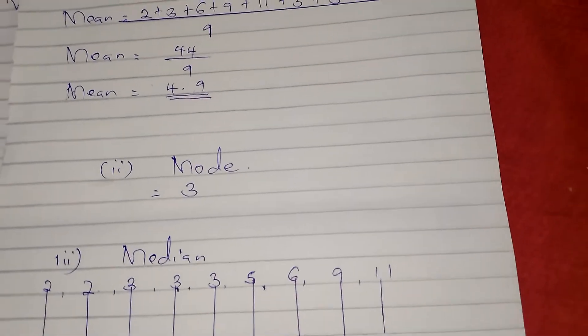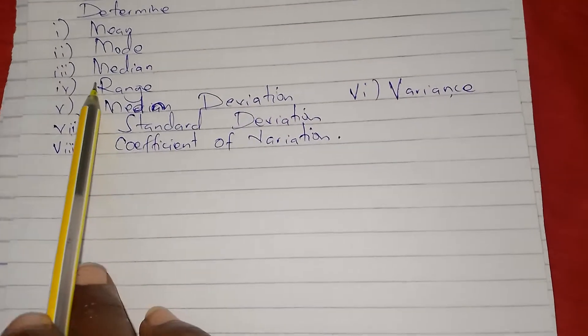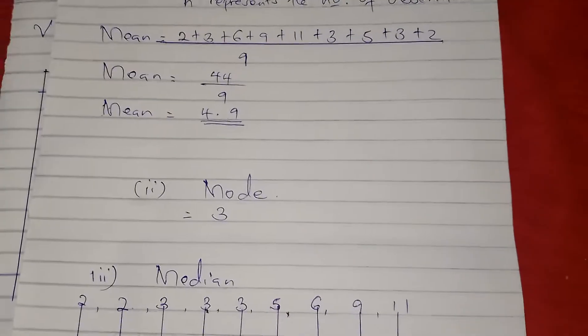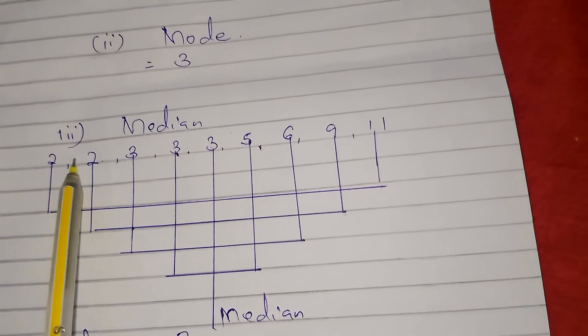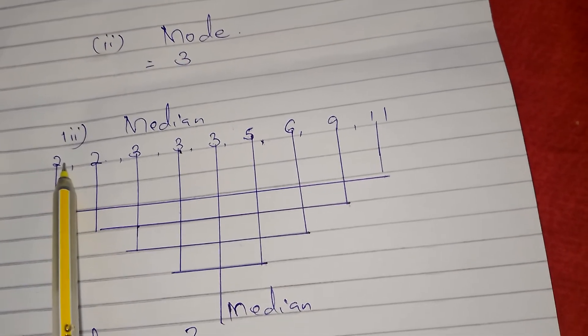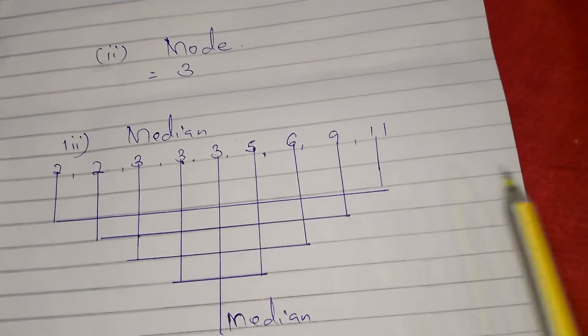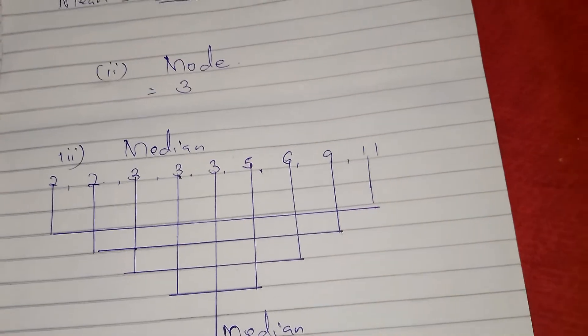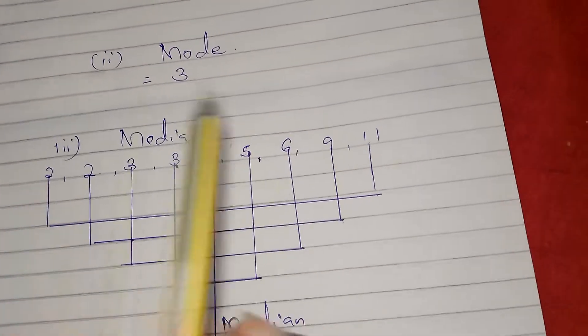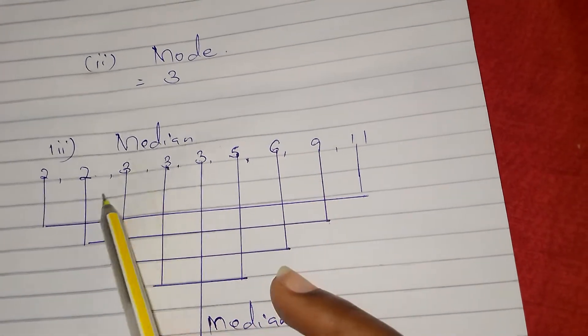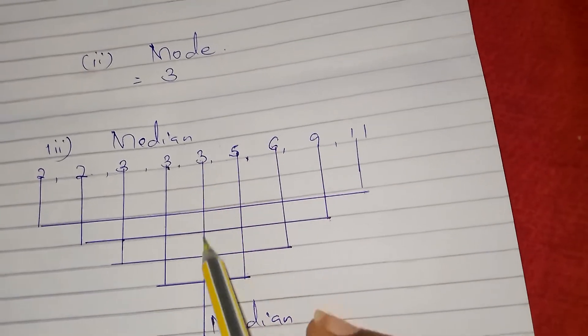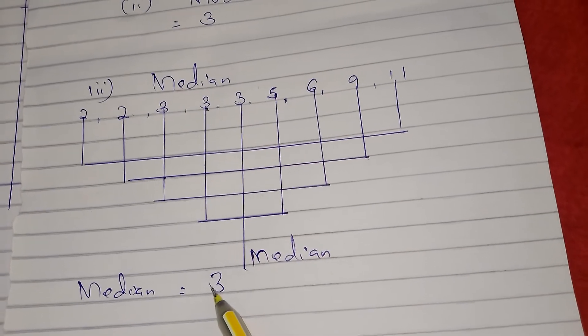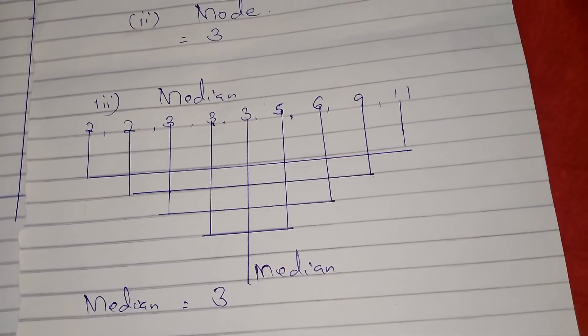Roman three: they want us to determine the median. Median for ungrouped data refers to that middle item. What we need to do is arrange from lowest to highest or from highest to lowest. We have 2, 2, then 3 three times, then 5, 6, 9, and then 11. We look for the middle item. Items cancel from both ends, and the middle item is 3. So 3 becomes our median.